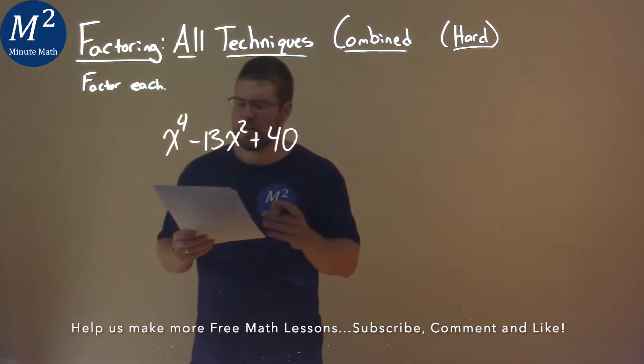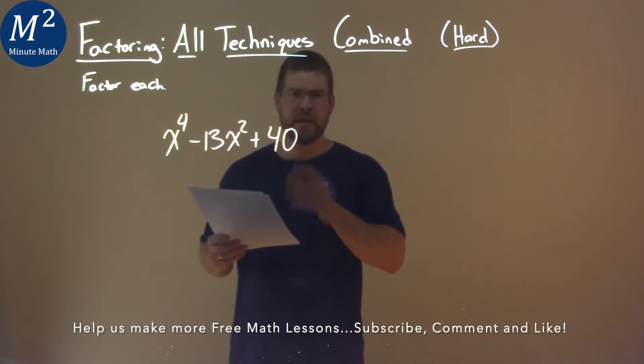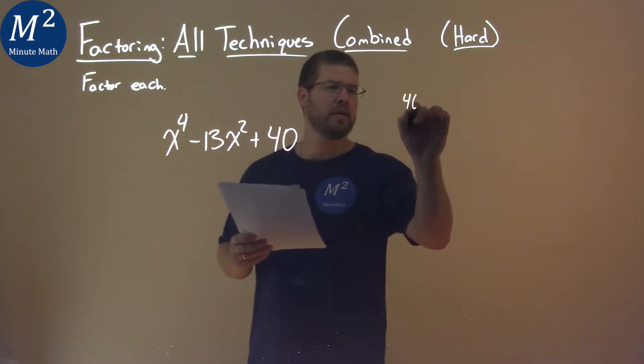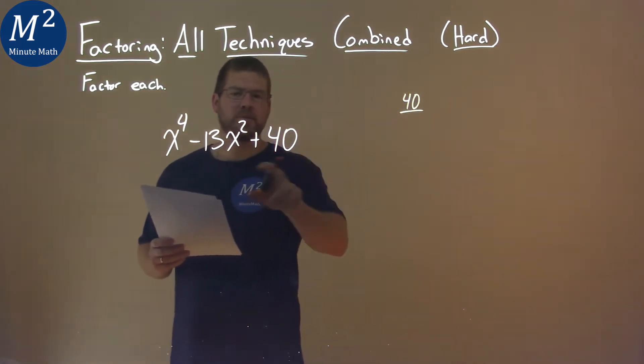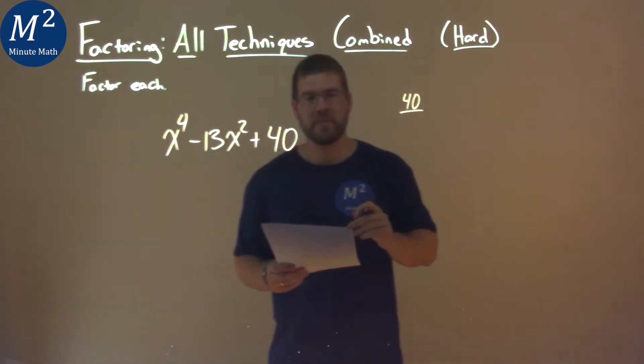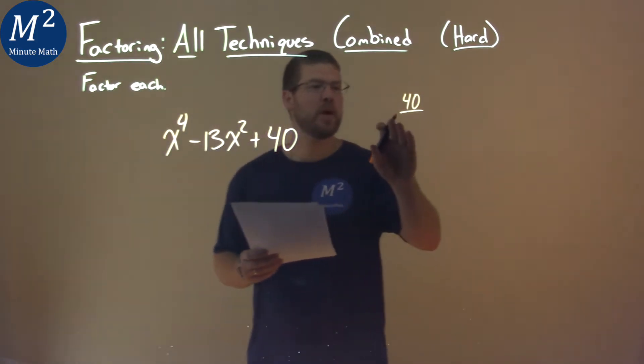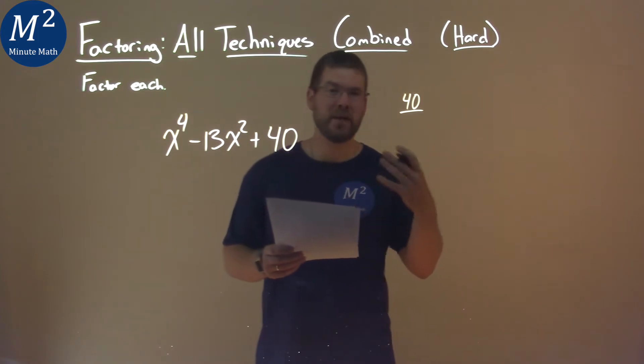Notice this is in quadratic form. My c value being 40 is the first clue, but we want to use this in combination with our b value being negative. That tells me the two numbers that multiply to 40 must both be negative.